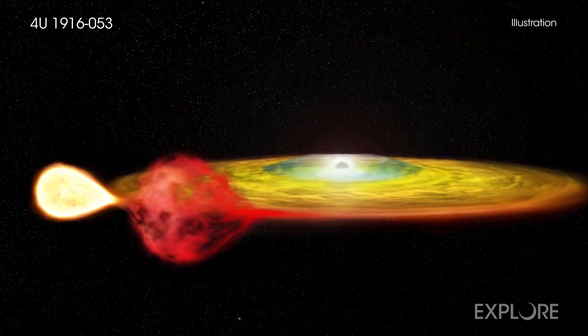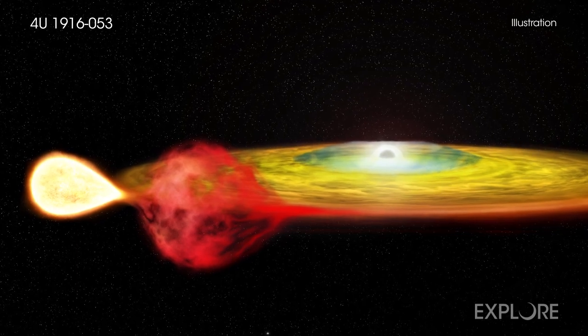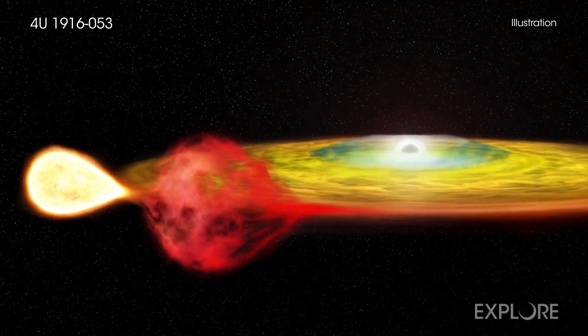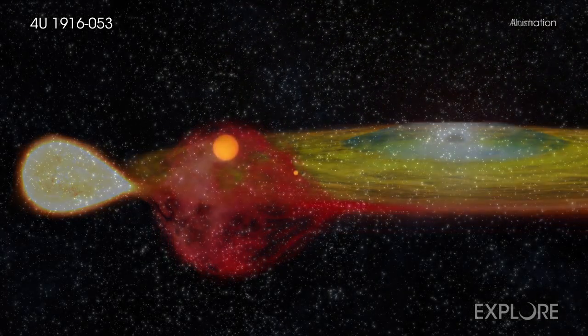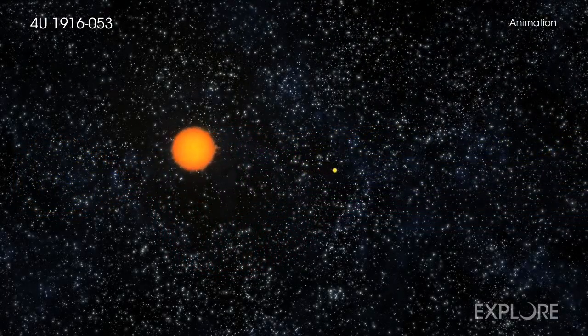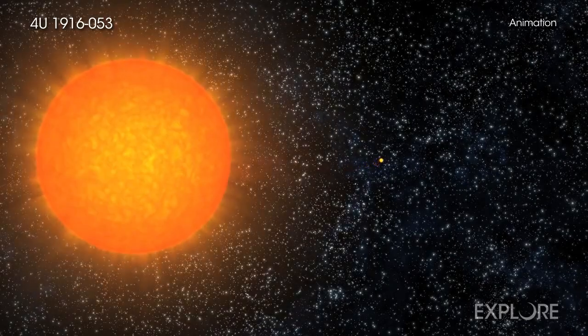The intriguing system, known as 4U-1916-053, contains two stars in a remarkably close orbit. One is the core of a star that has had its outer layer stripped away, leaving a star that is much denser than the Sun.